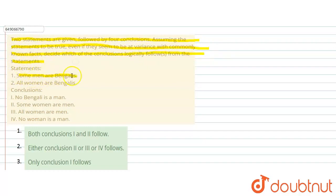Statements are: Some men are Bengalis, all women are Bengalis. Conclusions: no Bengali is a man, some women are men, all women are men, no woman is a man.